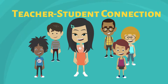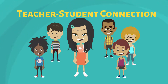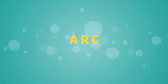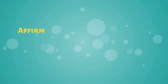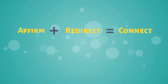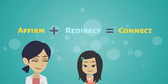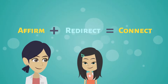Improving the class environment for everyone. To use this technique, remember the shortcut ARC: Affirm and Redirect to Connect. First, affirm what the student is doing or feeling. Then redirect the student with instructions or encouragement.